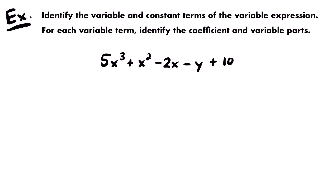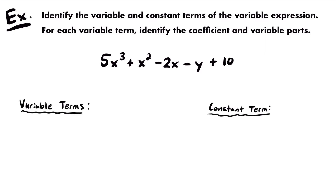The first thing we want to do is identify the variable and constant terms. Let's start with the easiest — let's look for any terms that don't have any variables. That would be our constant term. Looking at our variable expression here, there's only one: 10. So 10 is very clearly the constant term. In most variable expressions, there will be at most one constant term, because multiple constant numbers would just be combined together.